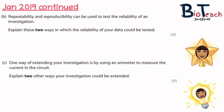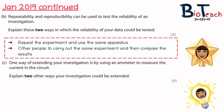Part B talked about repeatability and reproducibility, and how you can test the reliability of an investigation. It asked: explain two ways in which the reliability of your data could be tested, worth four marks. To test reliability, you want to repeat the experiment multiple times keeping the same apparatus each time. Another way is to get other people to carry out the same experiment and then compare your results — if they're similar, that supports reliability.